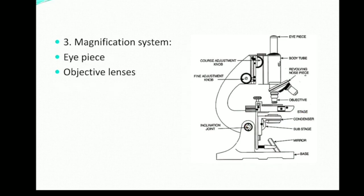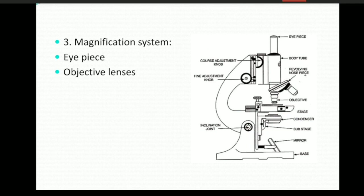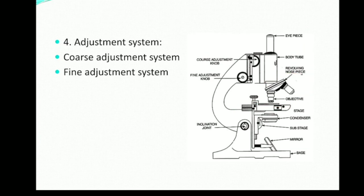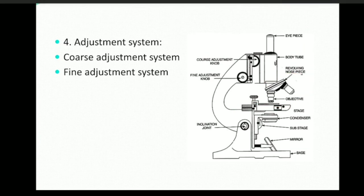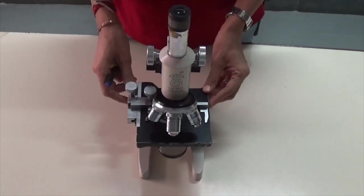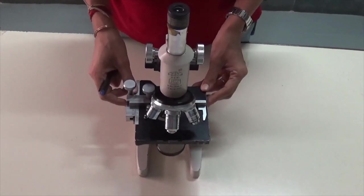The magnification system consists of the eyepiece — in a monocular microscope we have one eyepiece, whereas in a binocular microscope two eyepieces are present — and objective lenses. The adjustment system consists of coarse and fine adjustment. This is the coarse adjustment and this is the fine adjustment.